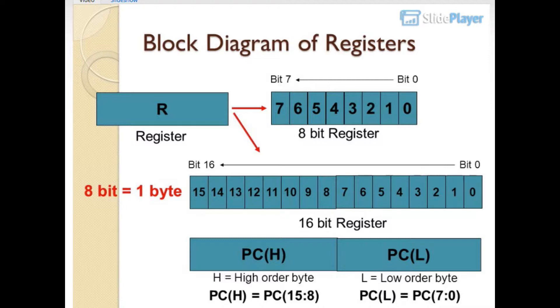Block diagram of registers: 8-bit register has bits 7 through 0. 16-bit register has bits 15 through 0. 8 bits equals 1 byte. PC can be split into PCH (high order byte, PC bits 15 to 8) and PCL (low order byte, PC bits 7 to 0).